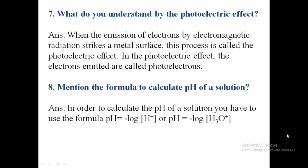Seventh question: what do you understand by the photoelectric effect? When electromagnetic radiation strikes a metal surface and causes the emission of electrons, this process is called the photoelectric effect. In the photoelectric effect, the electrons emitted are known as photoelectrons.